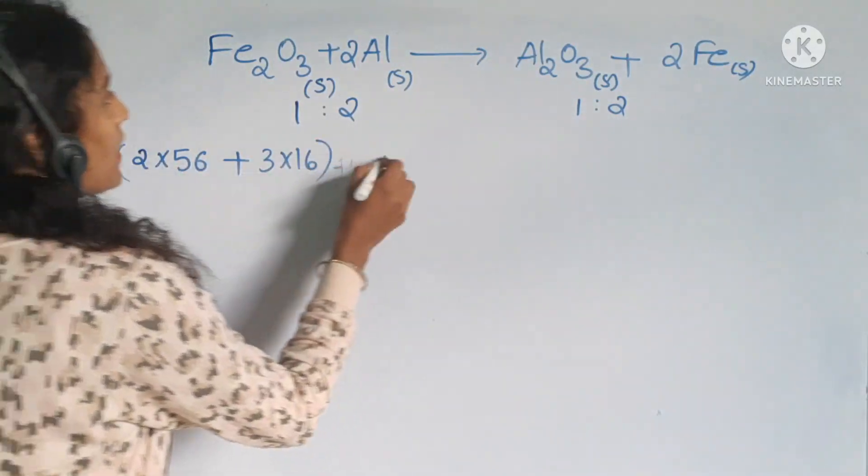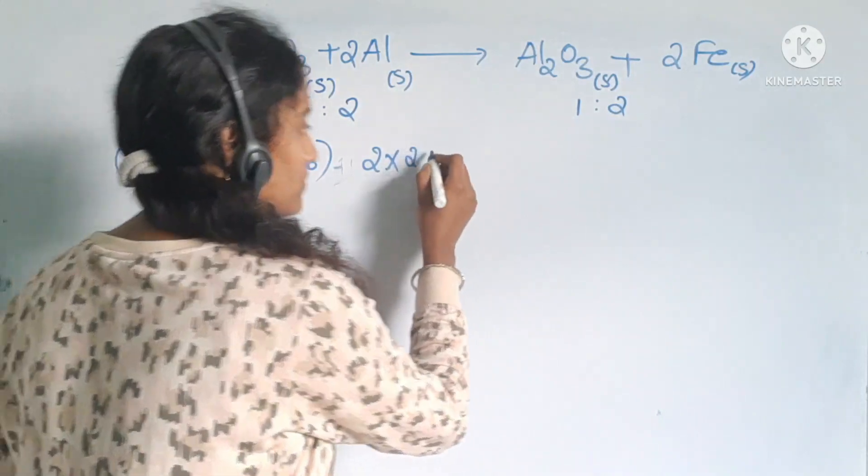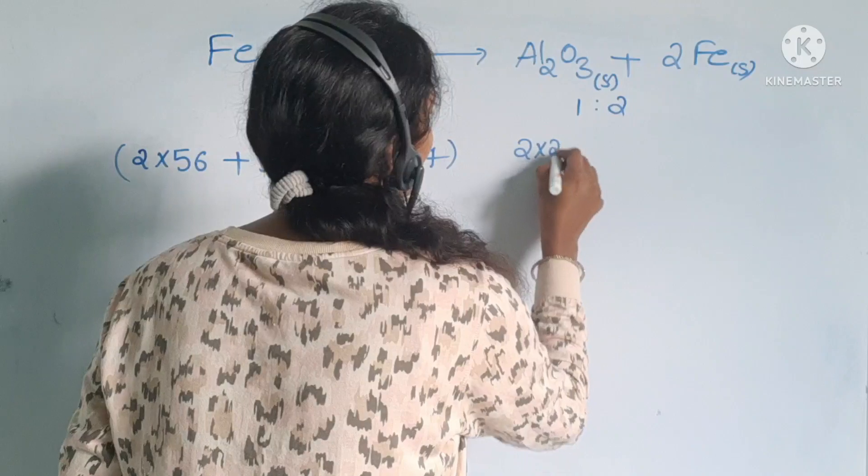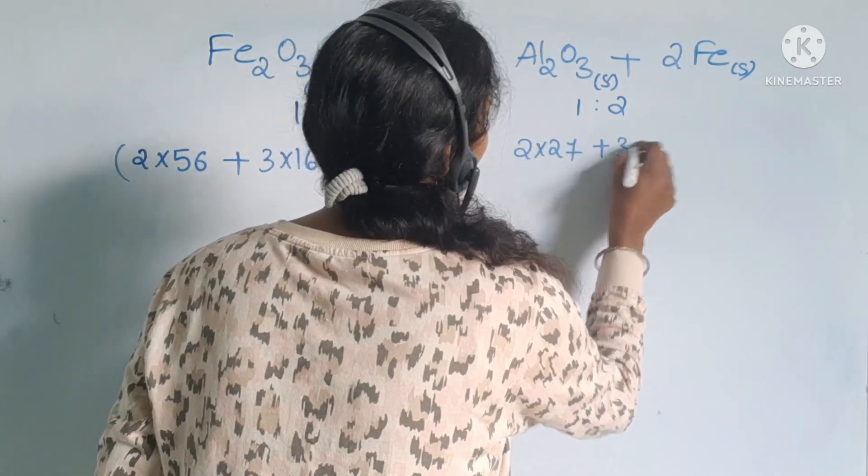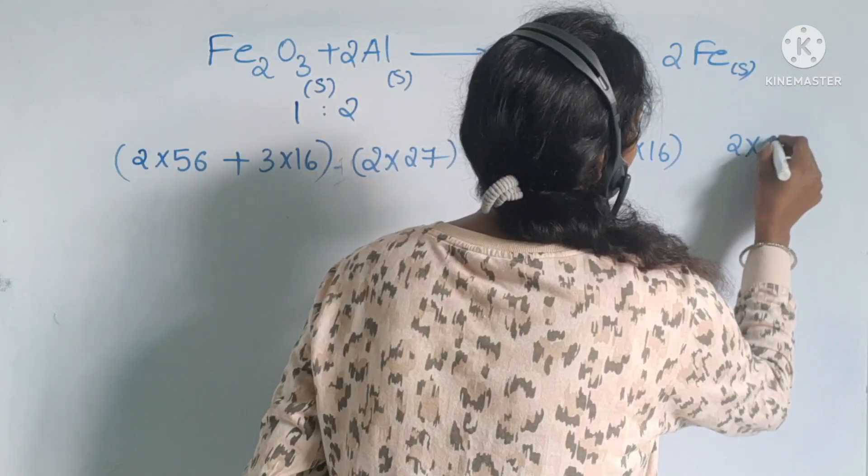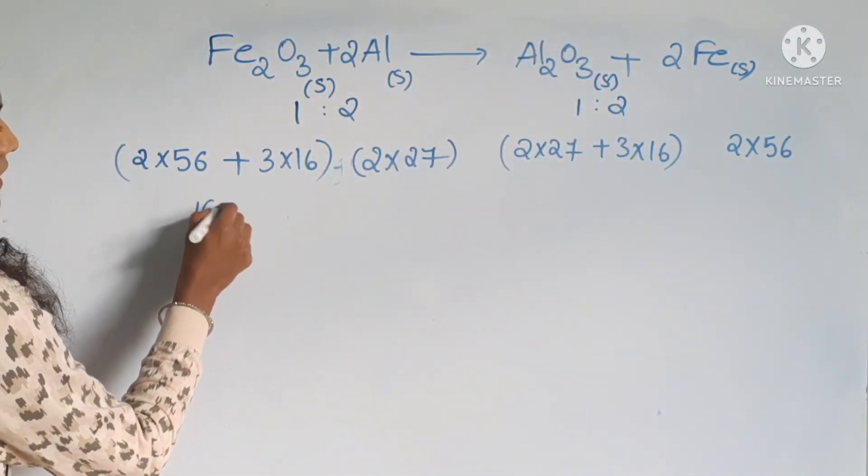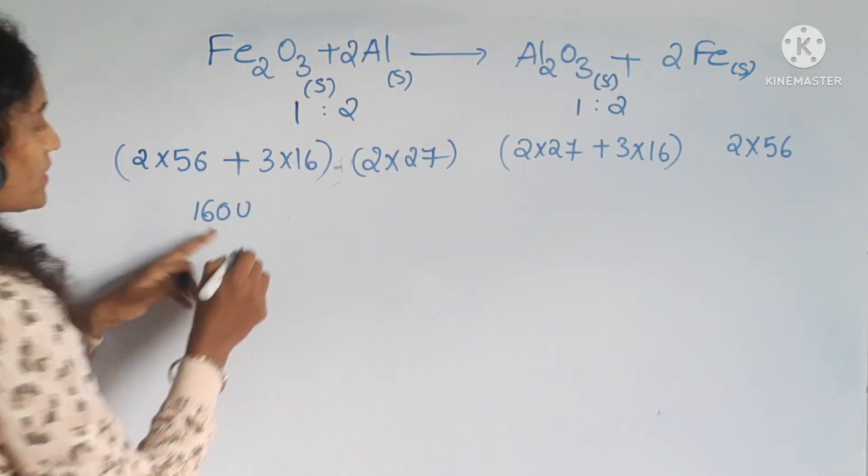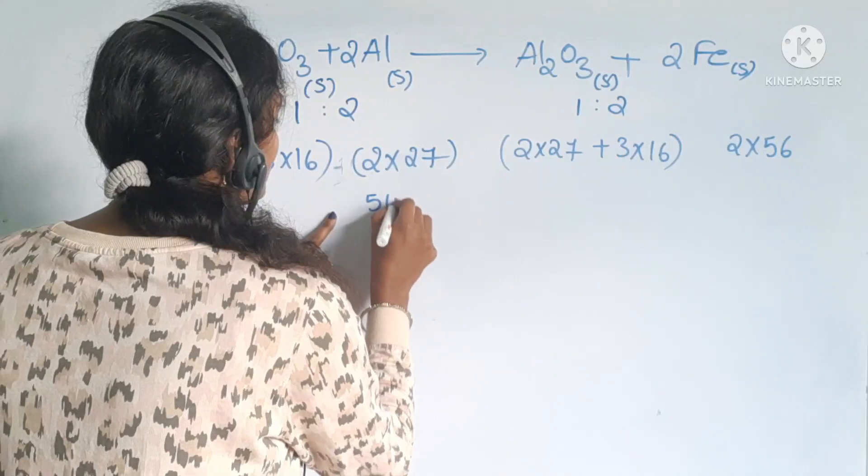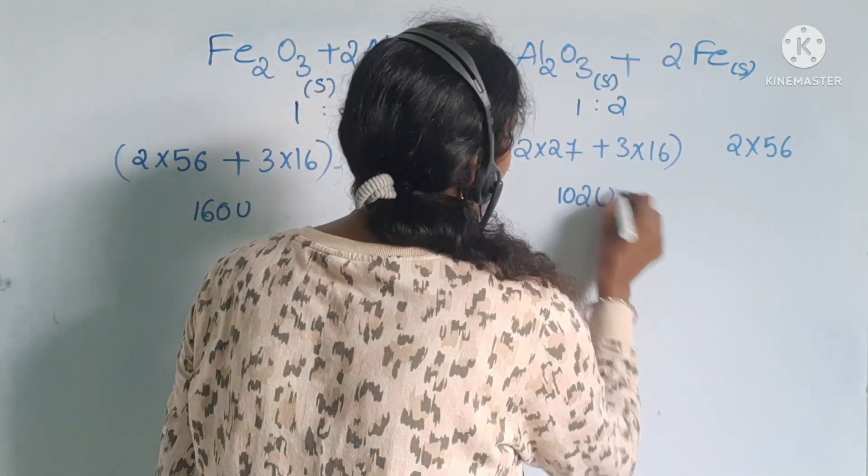And 2 into aluminum, 27. Next one, 2 into 27 plus 3 into 16. Next one, 2 into 56 students. After calculating all these things, simplify. After simplification, you will get 160 unified mass of Fe2O3 and 54U and 102U for Al2O3 and 112U.